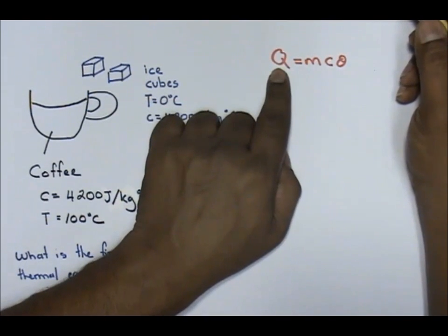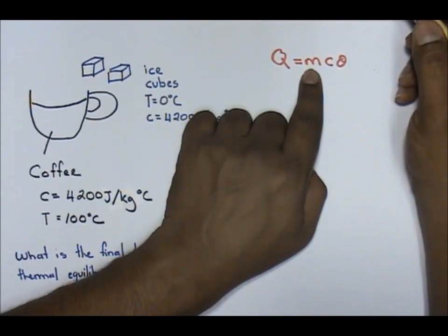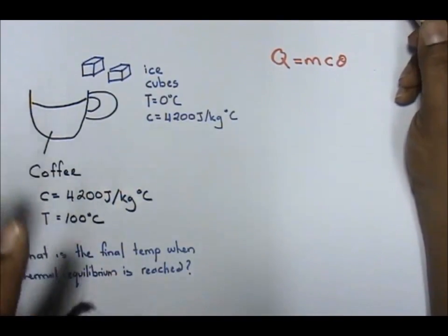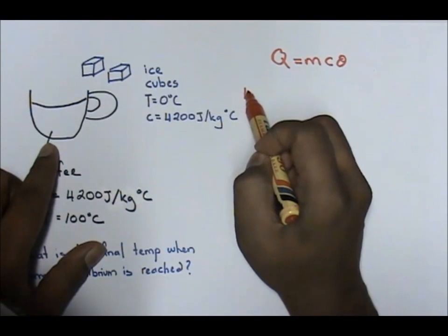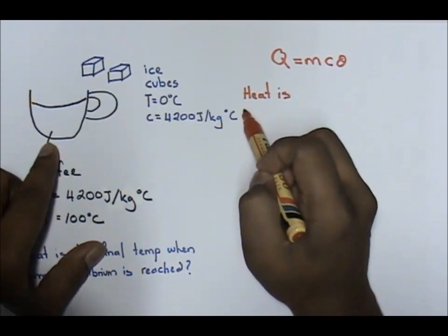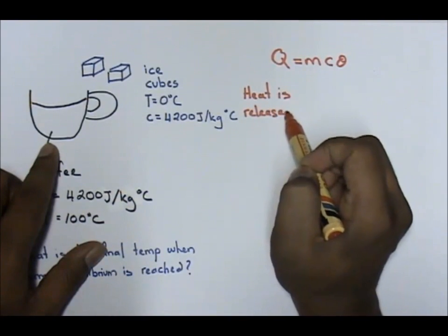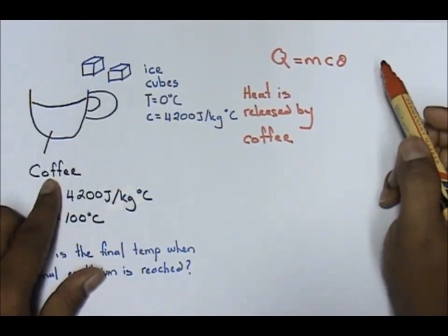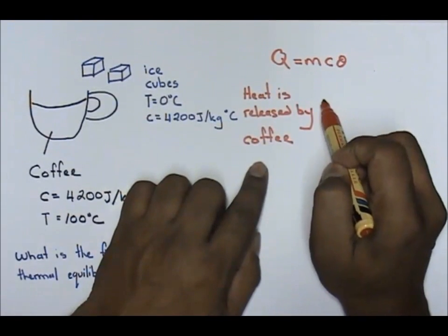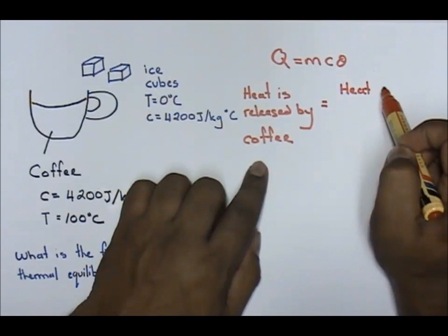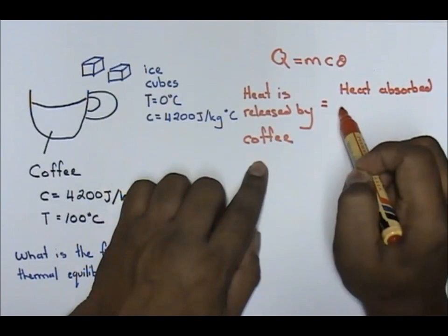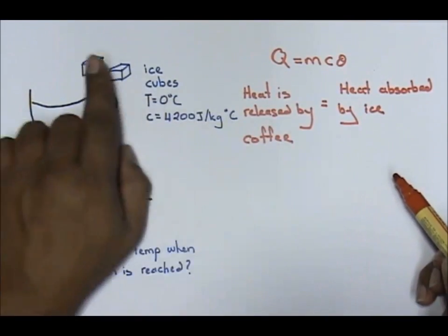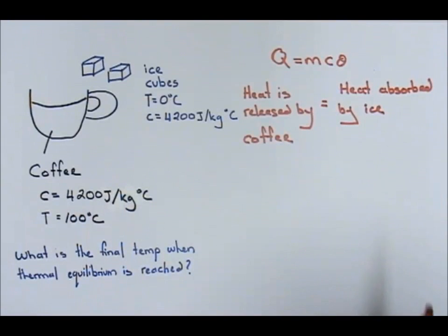So Q is the heat released or heat absorbed, M is the mass in kilograms — SI units — C is the specific heat capacity, and theta is the temperature difference. In this case, we understand that heat is released by coffee, and the heat released by coffee equals the heat absorbed by ice. After some time, thermal equilibrium is reached.